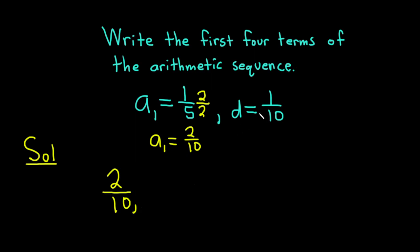The second one, well, we just add d, right? Because it's an arithmetic sequence, to get the rest of the terms, we just keep adding d, which is 1 over 10. So 2 over 10 plus 1 over 10 is 3 over 10. And that gives us the second term.